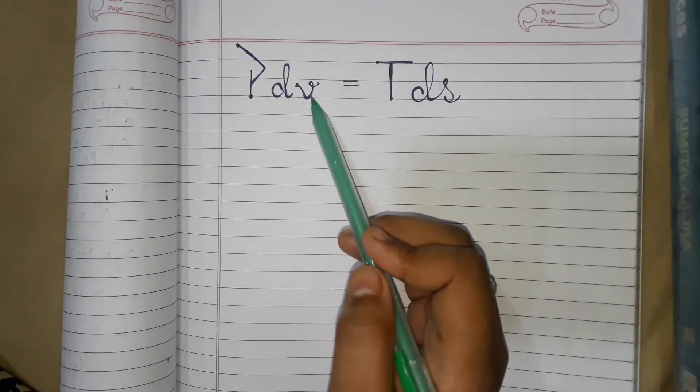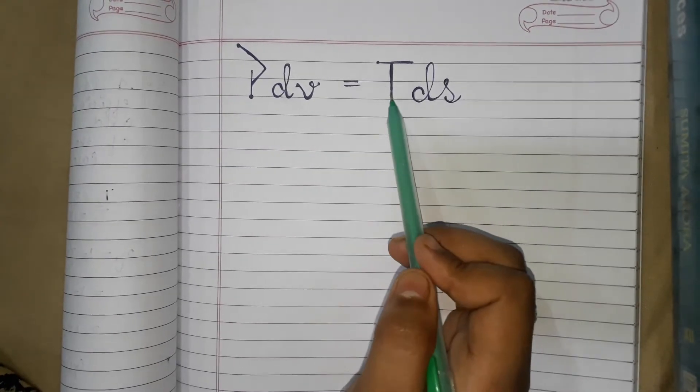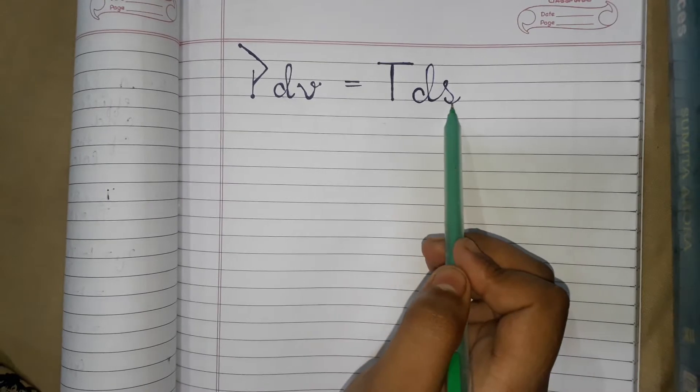Here P is the pressure, V is the volume, T is the temperature and S is entropy.